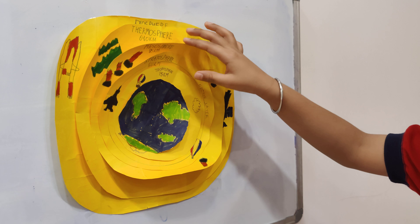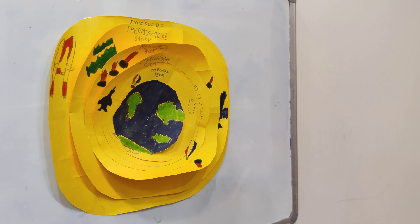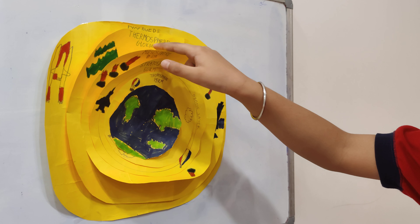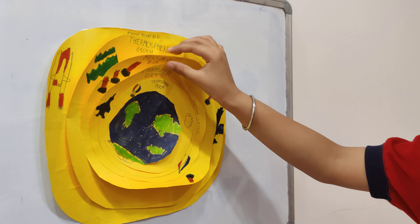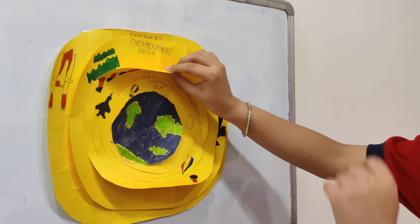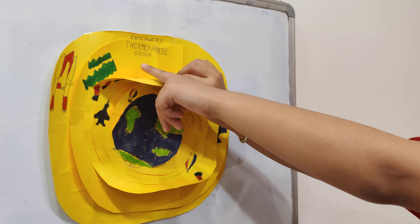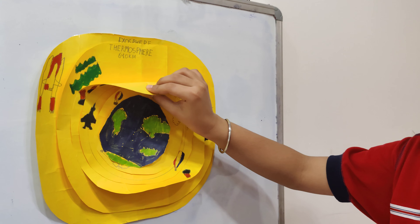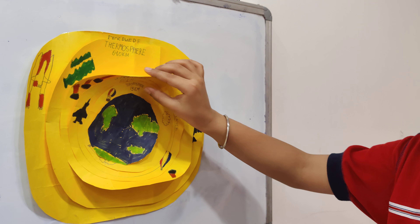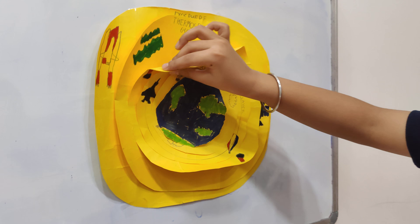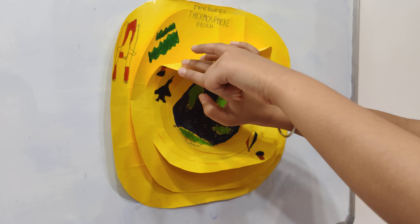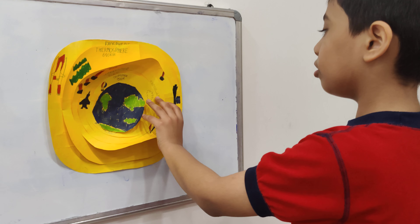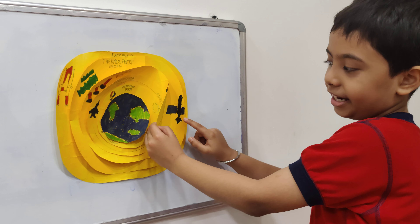Now, the fourth layer of the atmosphere — the thermosphere. This layer is around 640 kilometers thick. This is the layer where you see the northern lights and also satellites.